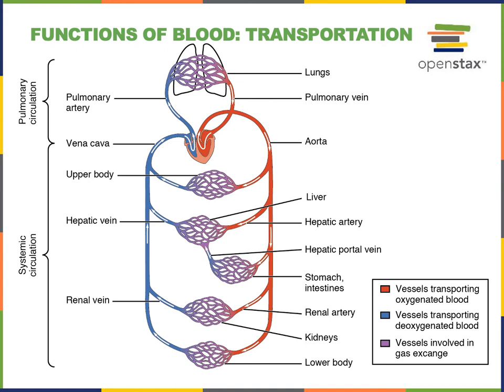Other wastes are transported in the blood. For example, the nitrogenous waste urea, a breakdown product formed from amino acid catabolism, is transported from the liver to the kidneys where the kidneys can remove that urea from the blood.